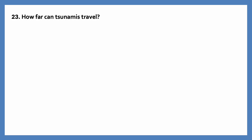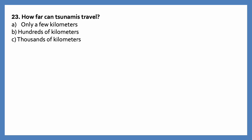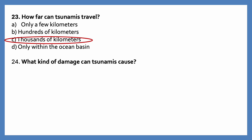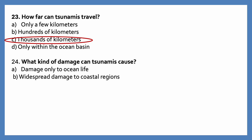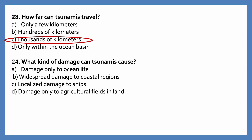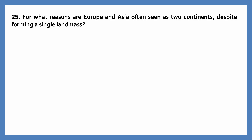How far can tsunamis travel? Options are: only a few kilometers, hundreds of kilometers, thousands of kilometers, only within the ocean basin. The correct answer is thousands of kilometers. What kind of damage can tsunamis cause? Options are: damage only to ocean life; widespread damage to coastal regions; localized damage to ships; damage only to agricultural fields inland. The correct answer is widespread damage to coastal regions.